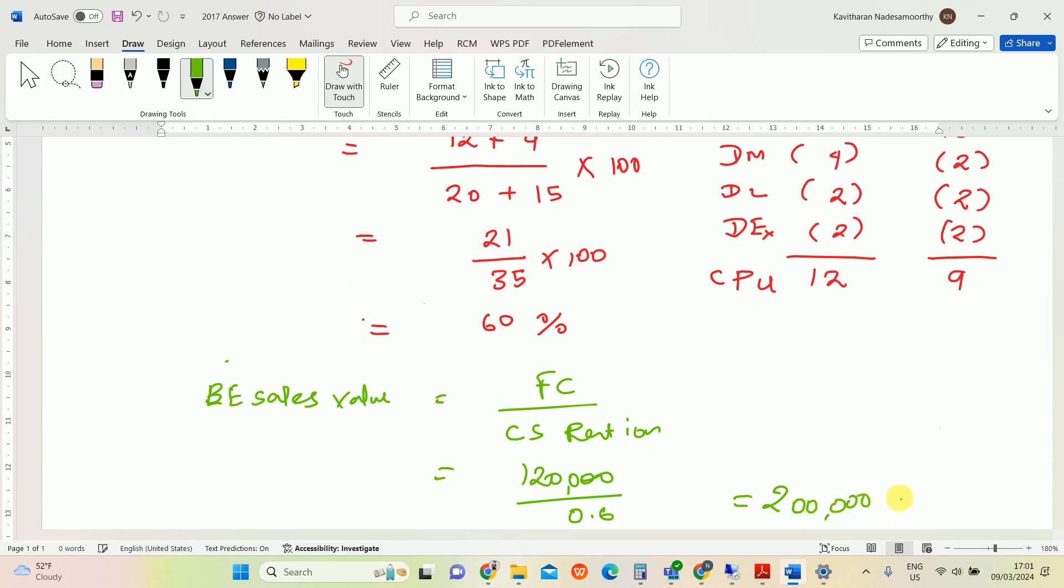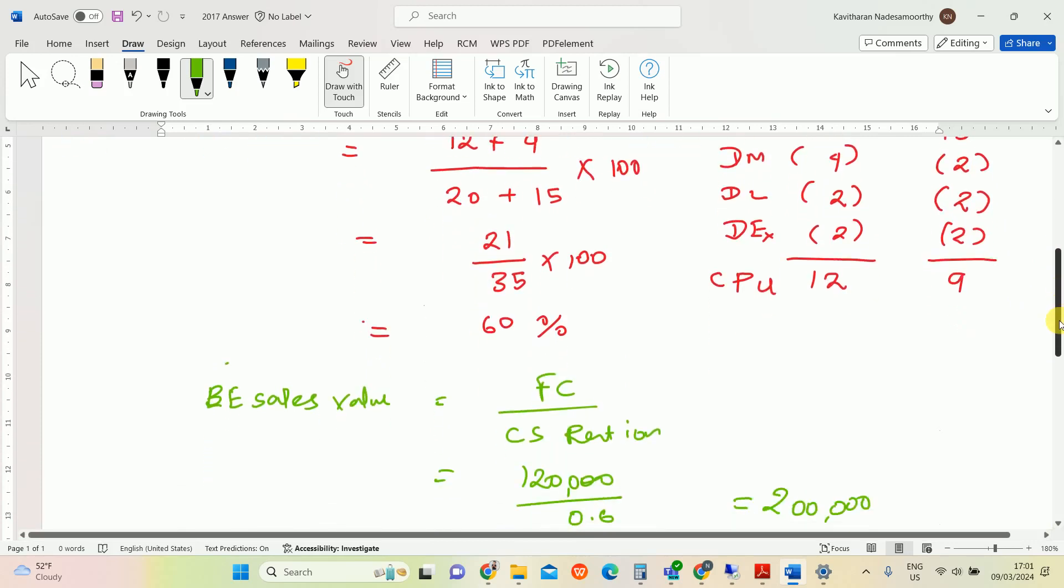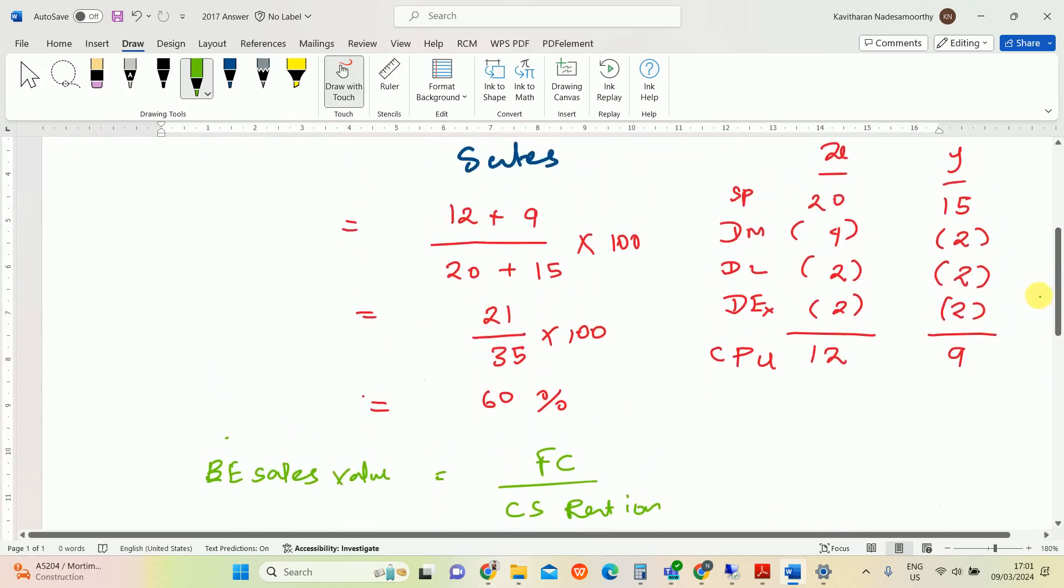So this is the answer for break-even sales value, and 60 percent is combined or overall C/S ratio. So this is the answer for these questions. You can follow the steps and get the marks.